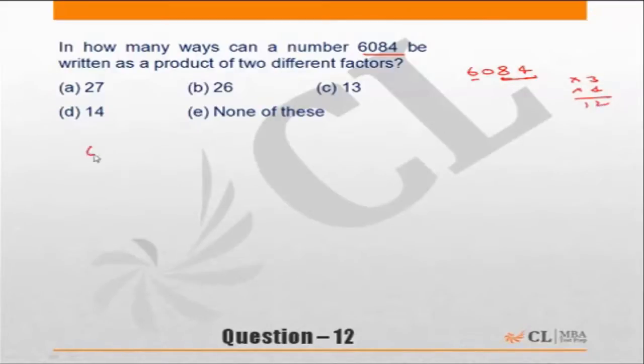So 6084 divided by 12 is equal to 12 into 507.